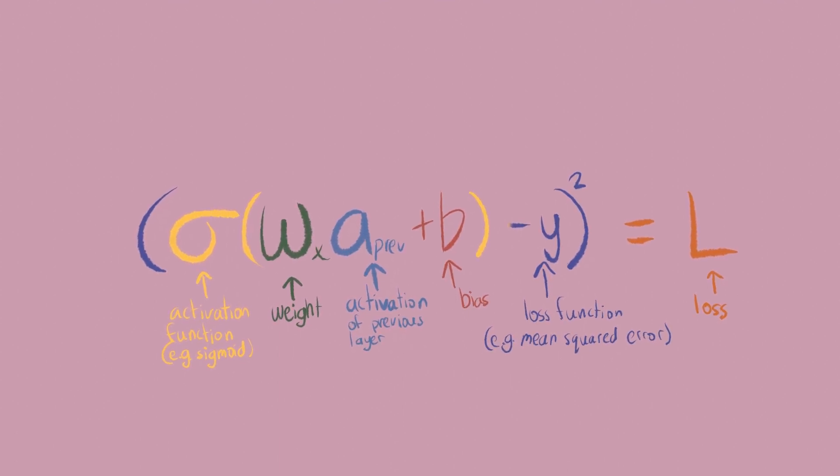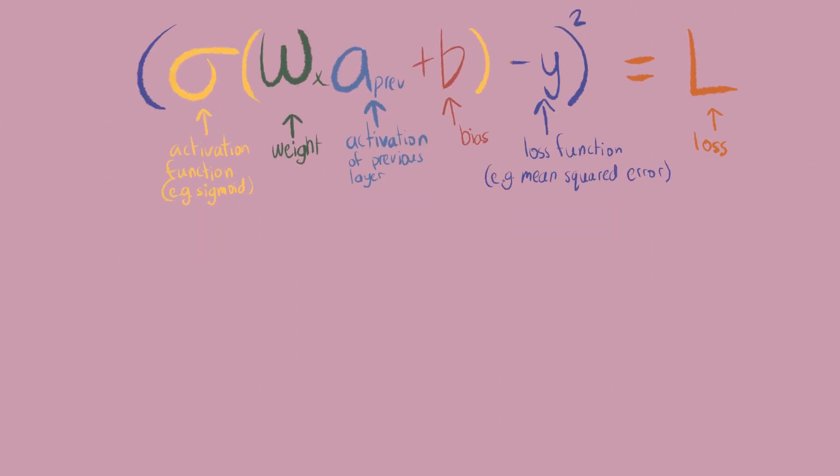Since we can't find the derivative directly, let's try and work backwards through the equation. It would be simple to find the change of the loss with respect to activation, but only if the activation was constant.